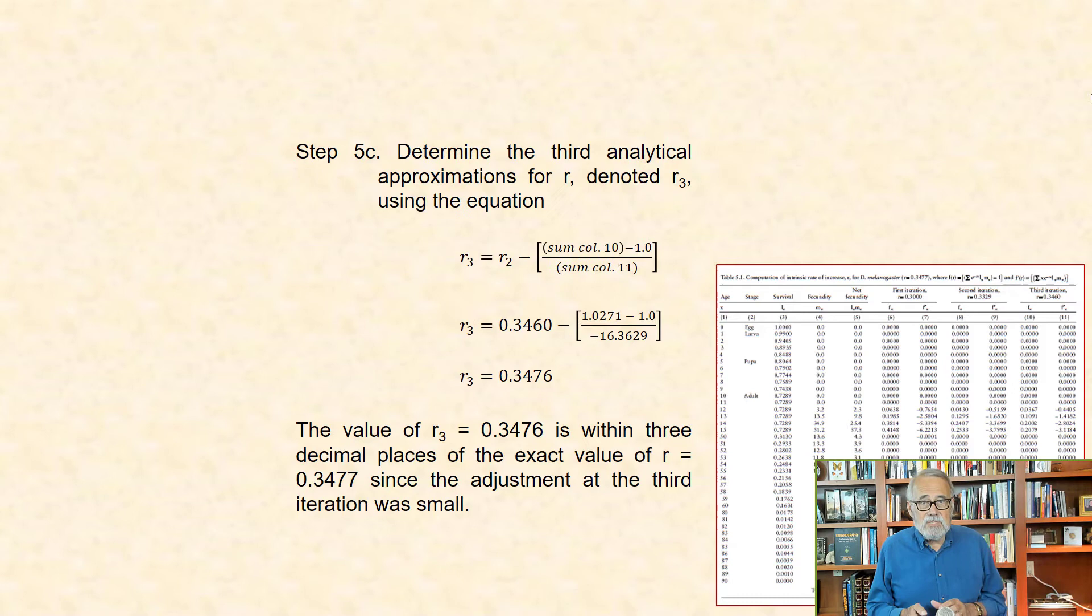Step 5c: Computations are similar to the first two iterations, except using the sums of columns 10 and 11, to yield a value of r3 equal 0.3476. This is a value that is within three decimal places of the exact value of r equal 0.3477, since the adjustment at the third iteration is very small.